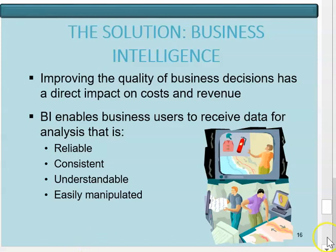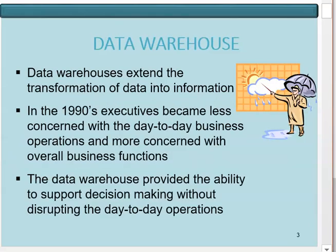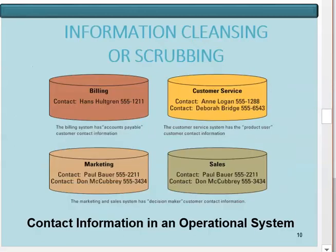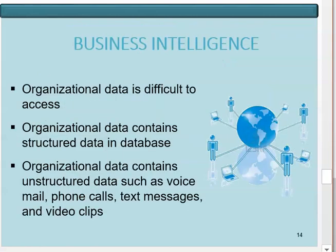That's all for this chapter. To quickly review what we have covered: a brief history of the data warehouse, the definition of what a data warehouse is, and its three components — data marts, information cleansing and scrubbing, and business intelligence. If you have any questions or concerns, please feel free to contact me. I hope you have a wonderful day. Thank you.